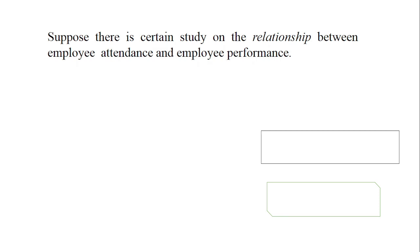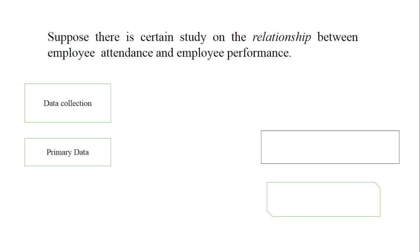Let's discuss some examples of methodological research gap. Suppose a particular study on the relationship between employee attendance and employee performance has been conducted previously. That researcher collected primary data using a questionnaire — distributing questionnaires among employees, who filled them out and returned them. The researcher then performed several types of statistical tests. This is the case of the previous study.